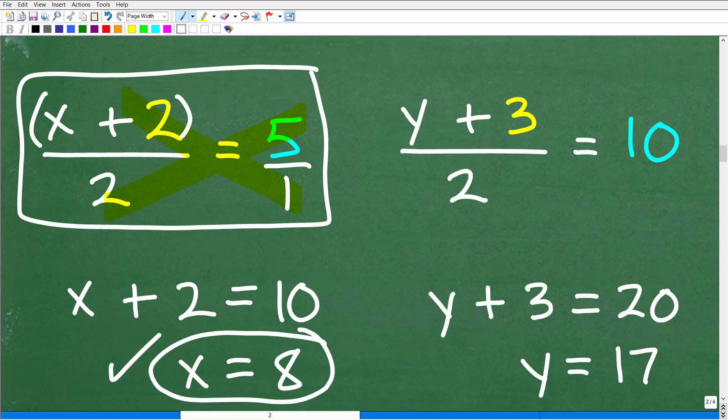Very simple. Let's solve for y here. We're going to do the exact same thing. We're just going to use the cross product. We can think of this as a basic proportion. All right, 2 equal fractions. So 1 times y plus 3 is y plus 3, and that's going to be equal to 2 times 10, which is 20. So when I solve for y by subtracting 3 from both sides of the equation, I get y is equal to 17.